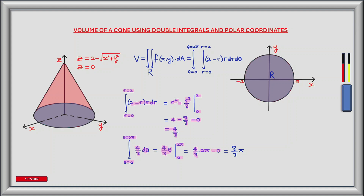So our final answer is 8π/3. Let's quickly verify this using the formula for the volume of a cone: V equals πr²h divided by 3. In our case r equals 2 and h equals 2, so V equals π times 4 times 2 over 3, which gives V equals 8π/3. This confirms our result.